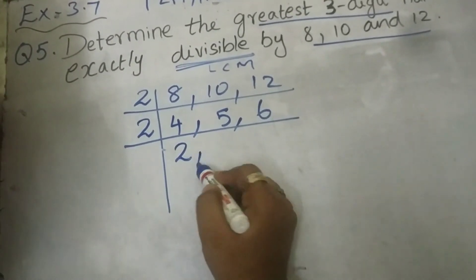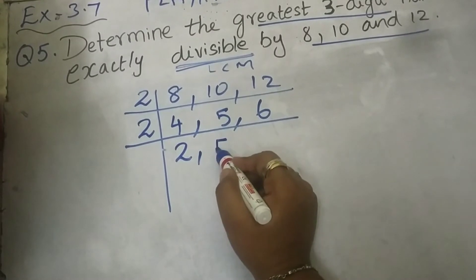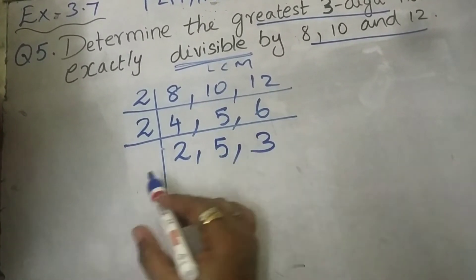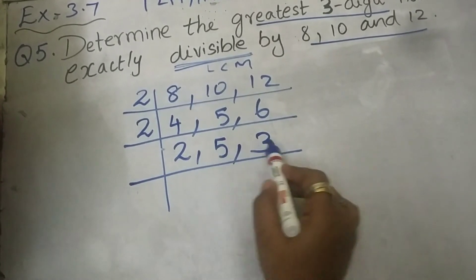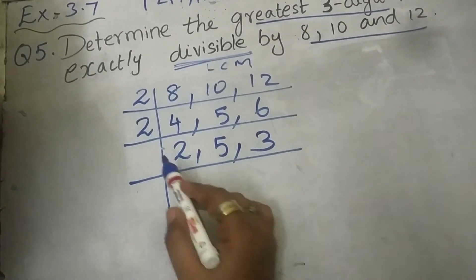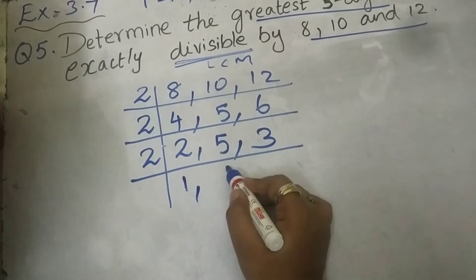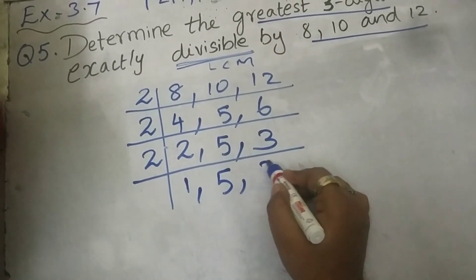2, 2's are 4. In 2 table, 5 won't come in LCM. What we will do? We will write the same number as it is. 2, 3's are 6. Then, 2, 5, 3. If you see, all are prime numbers. So first let me solve this 2. 2, 1's are 2. Write the 5 as it is and 3 as it is.